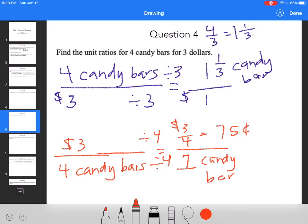So I can either get one and a third candy bars for a dollar, or I can get one candy bar for $0.75 because they asked for the unit rate.